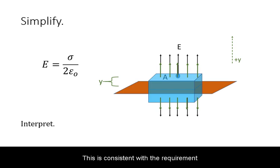This is consistent with the requirement that electric field lines do not cross. For such a uniform charge distribution, this means they need to stay parallel. The distance from the plane does not matter.